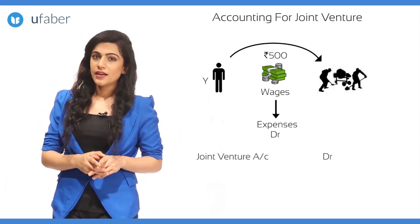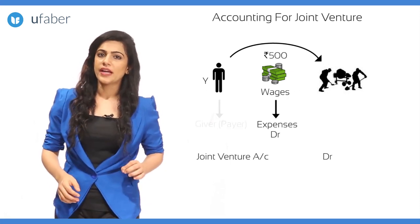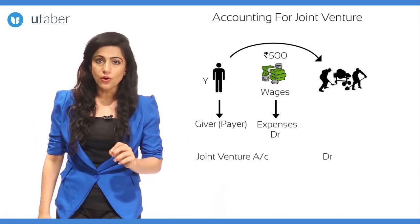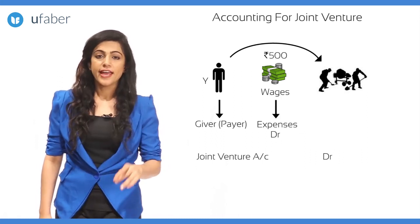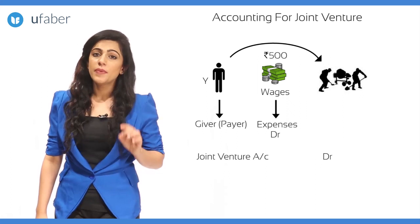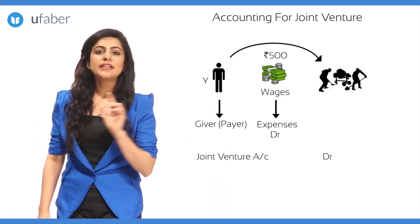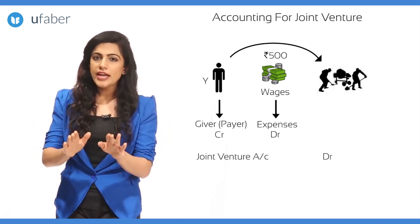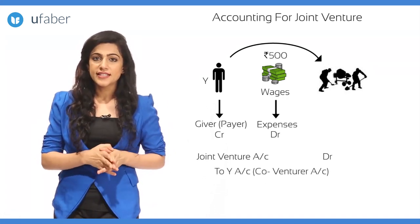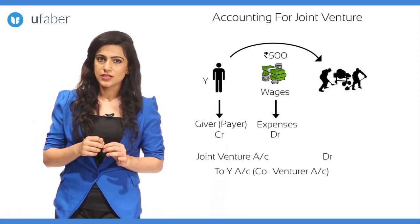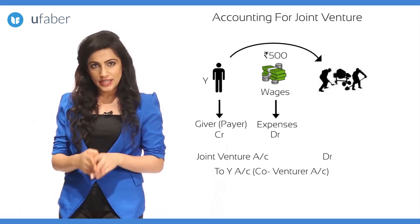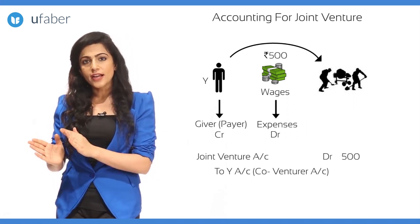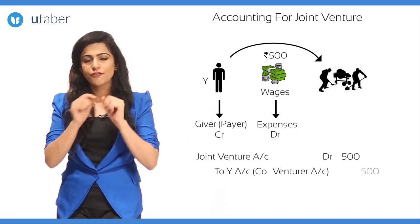The amount is being paid by Y, who is a co-venturer — the joint venture now owes money to Y. The golden rule for personal account is debit the receiver, credit the giver. Hence we credit Y's account (co-venturer's account). So the journal entry is: joint venture account debit 500, to Y account (co-venturer's account) 500.